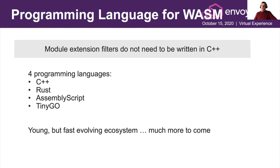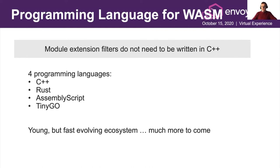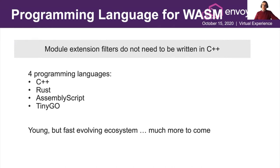A word about programming languages you can use with ProxyWasm. One of the promises of ProxyWasm is to allow programming of Envoy extensions with non-C++ languages. If you want to write a proxy extension today, there are four languages available: C++, Rust, AssemblyScript, and Go. Starting from the bottom — Go through TinyGo is the latest addition. It's very new, and the main issue with Go or similar languages is that no Wasm VM or Wasm sandbox can yet deal with garbage collection.